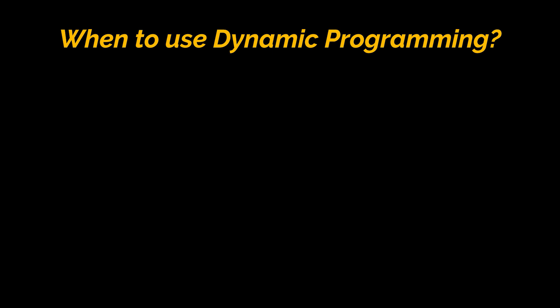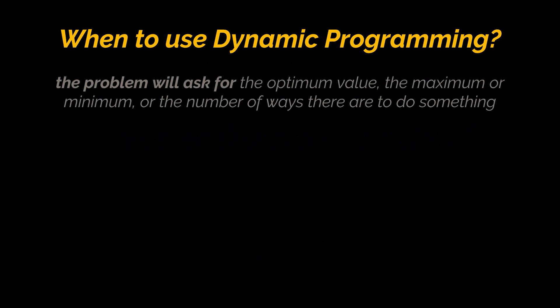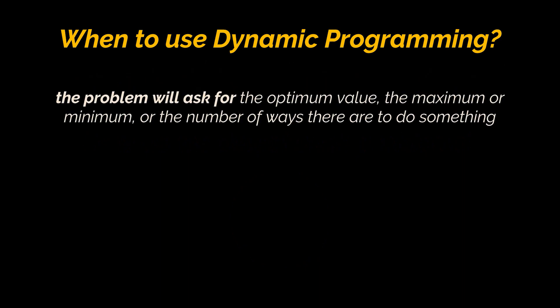The last question I'll try to answer in this video is: when to use dynamic programming? We previously identified a DP problem as one that can be broken down into overlapping sub-problems, or as a problem that has an optimal sub-structure. But how do we detect such problems?